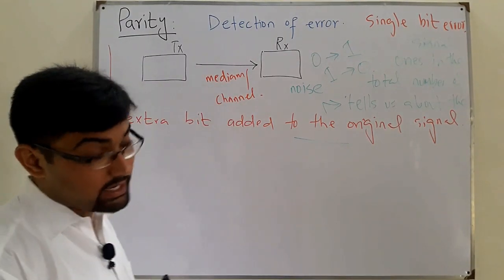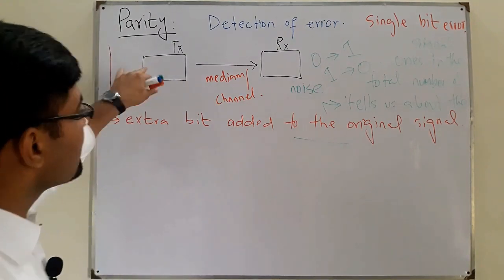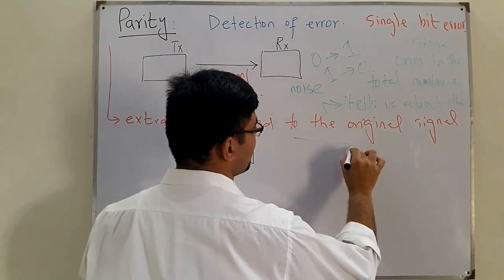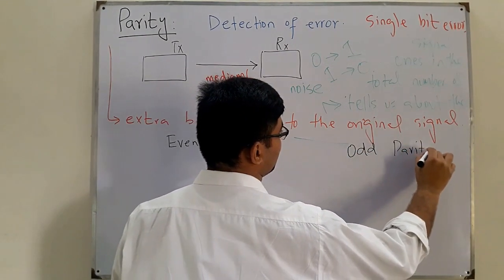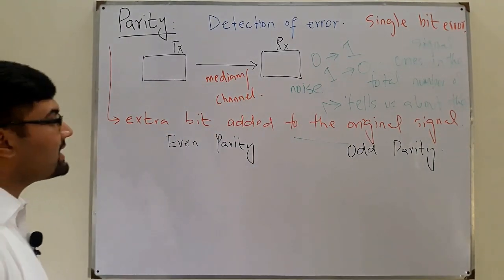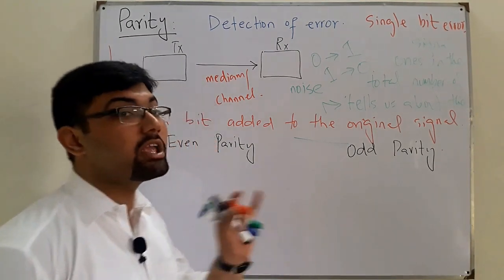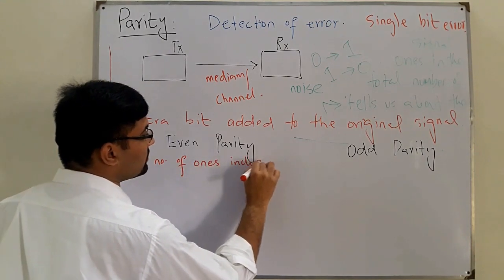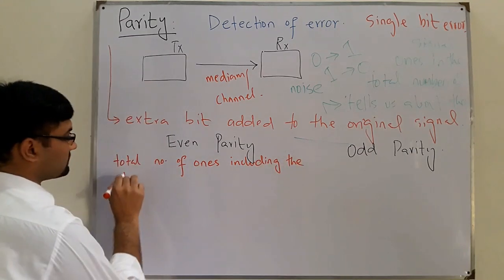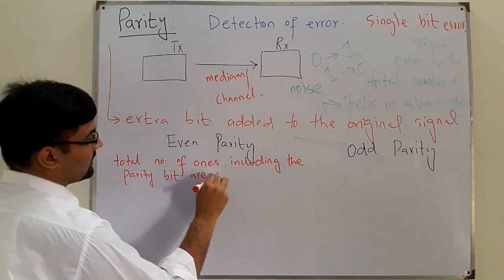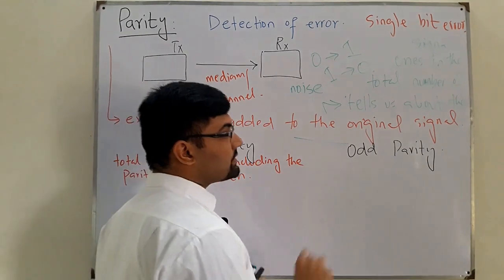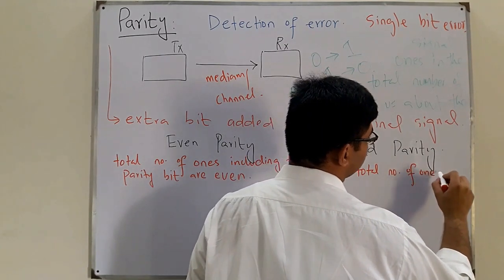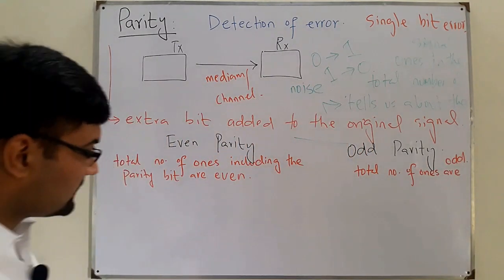We'll see that in detail in the Hamming code, but this is just an introduction to parity. We have two types of parity: even parity and odd parity. In even parity, the total number of ones including the parity bit are even. In odd parity, the total number of ones including the parity bit are odd.